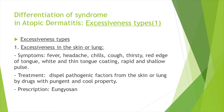There are six excessiveness types. First, excessiveness in the skin or lungs: noxious fire in the skin or lungs can cause inflammation. Symptoms are fever, headache, chills, cough, thirst, red edge of tongue, white and thin tongue coating, and rapid and shallow pulse. For treatment, pathogenic factors are dispersed from the skin or lungs using drugs with pungent and cool properties.